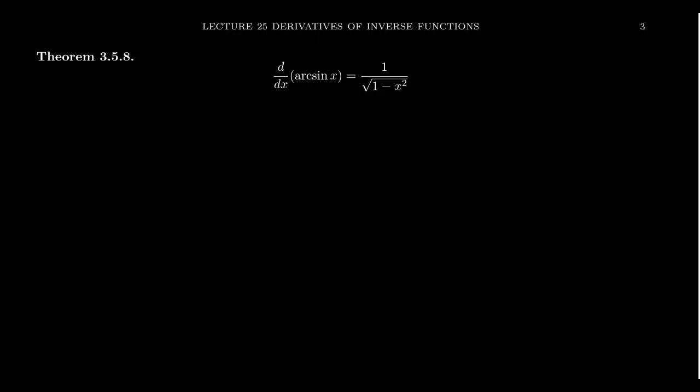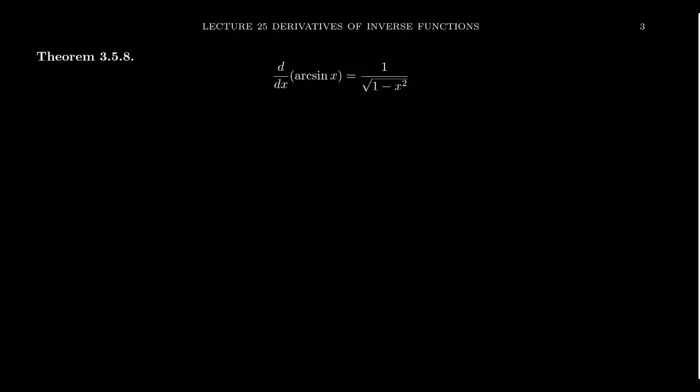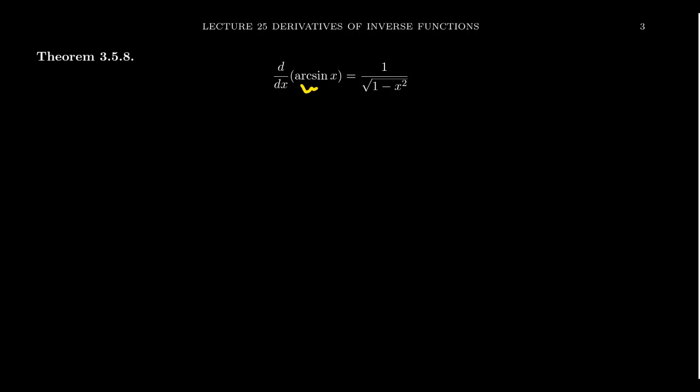I claim that the derivative of arc tangent of x is going to be 1 over the square root of 1 minus x squared. That might seem obscure or random at this moment, but at the end of this argument I'm going to show you that it's actually quite natural to think of it this way. The idea is going to be the following: consider arc tangent — we're going to call it y.